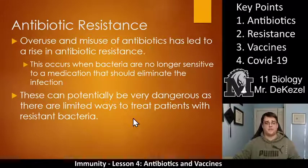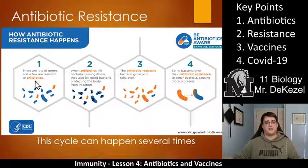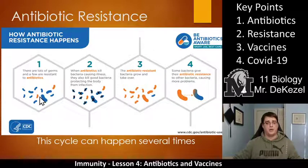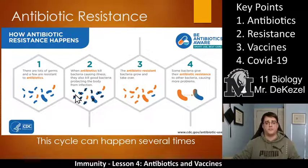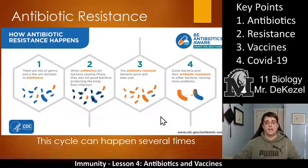These can potentially be very dangerous, as there are limited ways to treat patients with resistant bacteria. Essentially, if we have a bunch of bacteria here and we treat it with antibiotics, there are two different types — blue and orange. The antibiotics would kill all of the blue ones, but we'd be left with orange ones that the antibiotics do not work on. When antibiotics kill bacteria causing illness, they also kill good bacteria that protect the body, and can cause more damage when overused. You get left with way more orange or resistant bacteria than the original.